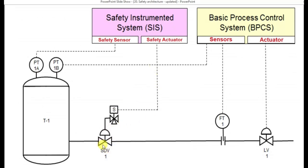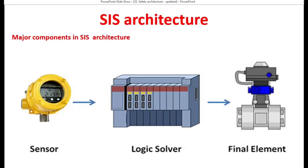The safety instrumented system — with the logic built inside the logic solver — will do the necessary action and give the command to close the shutdown valve, so that liquid entry into the reactor will get minimized or controlled. The pressure transmitter, safety instrumented system logic solver, and valve are all acting independently. That is why it is known as an independent protection layer.